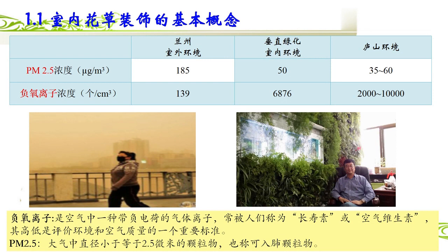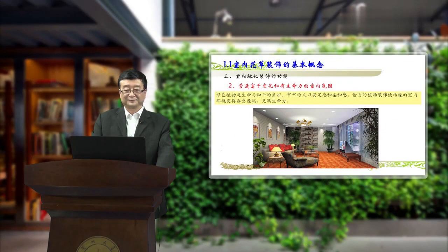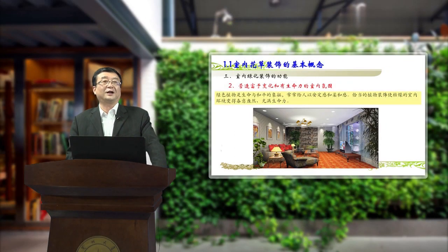PM2.5大家非常熟悉，就是指大气中直径小于等于2.5微米的颗粒物，也称作可入肺的颗粒物，这种颗粒物呼吸了以后直接可以入肺。从这个照片和数据我们可以看到外面的空气多么脏、雾霾多么严重。我们现在没有能力把外面的环境一下改变，但是我们完全可以用我们的知识改变我们的室内环境，使我们的室内的空气清新健康。